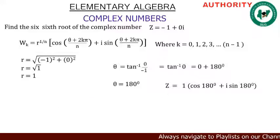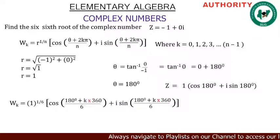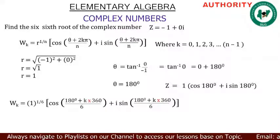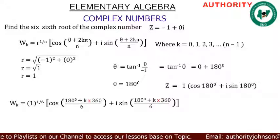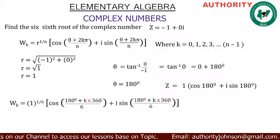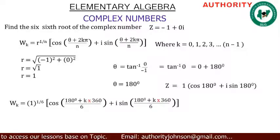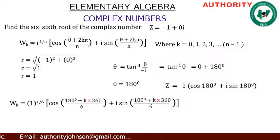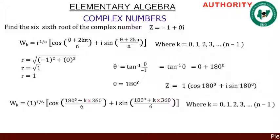So z = 1·(cos 180° + i·sin 180°). Now applying the formula with r = 1 and n = 6: wk = 1^(1/6) · [cos((180 + k·360)/6) + i·sin((180 + k·360)/6)], where k = 0, 1, 2, 3, up to n minus one.